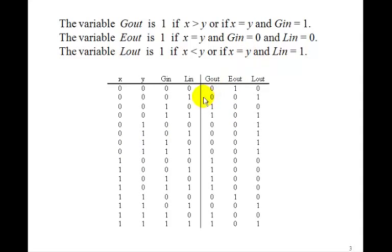Or if they're equal and Lin is 1. So here's Lin is 1 and they're equal. Here Lin is 1 and they're equal. Here Lin is 1 and they're both 1. So that's how we get the truth table.